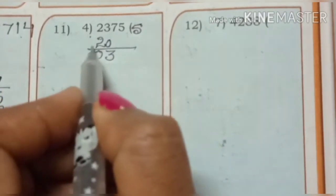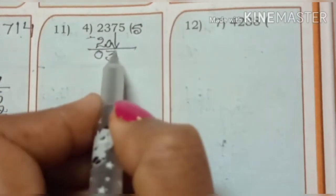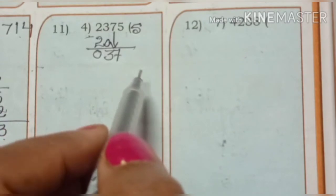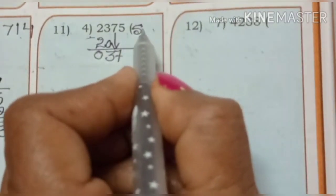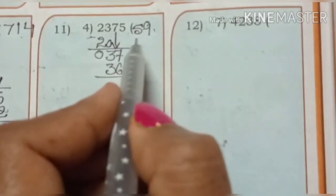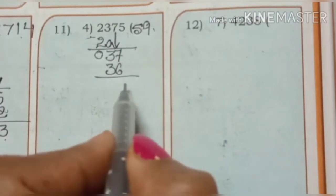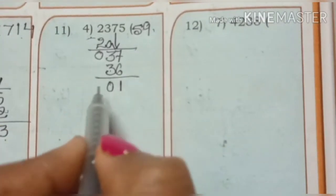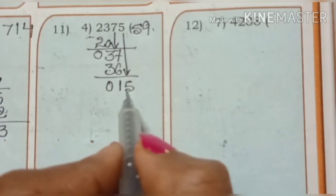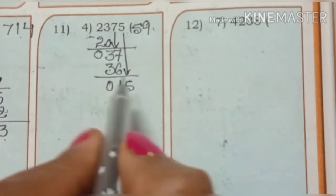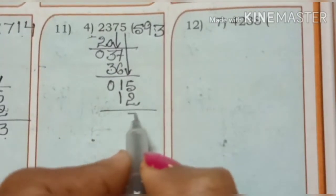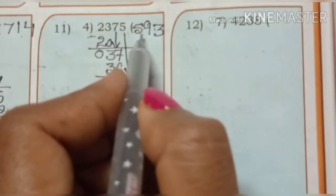Bring down 7 — we get 37. Divide 37 by 4: 4 nines are 36. 7 minus 6 is 1, 3 minus 3 is 0. Bring down 5 — we get 15. Divide 15 by 4: we can divide 3 times. 4 threes are 12. 5 minus 2 is 3, 1 minus 1 is 0. The quotient is 593 and remainder is 3.